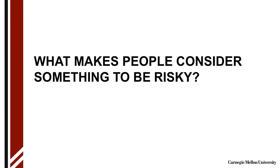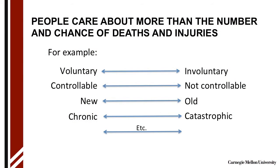And what makes people consider something to be risky? Well, it turns out there's quite a lot of evidence that people care about things other than just the number of deaths and injuries a risk causes. We obviously care about that. But in terms of judging whether something is risky, we also think about whether it's voluntary or involuntary, whether we have control over it, whether it's new or old, whether it's chronic or catastrophic. There's a whole list of things like this, and there's a strong experimental literature showing that all those factors matter.